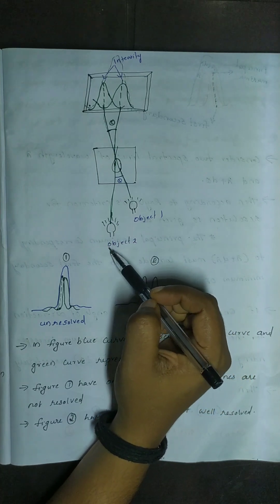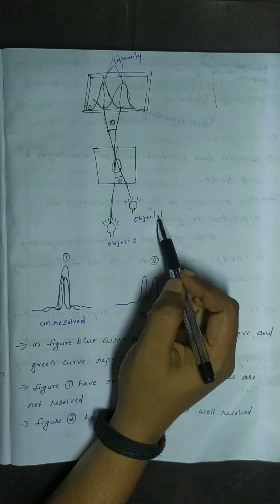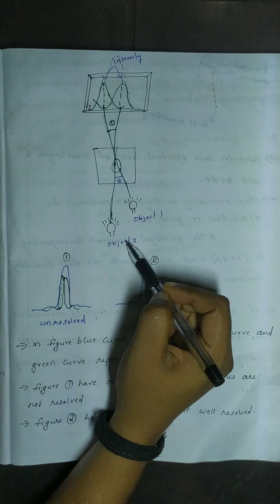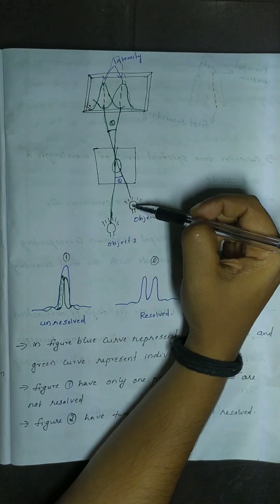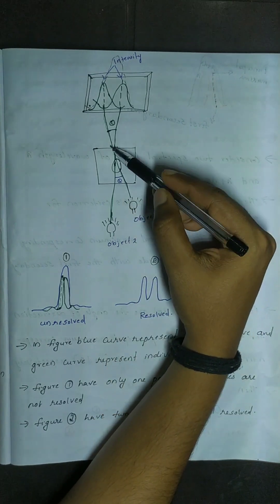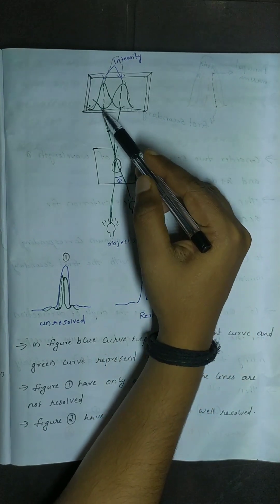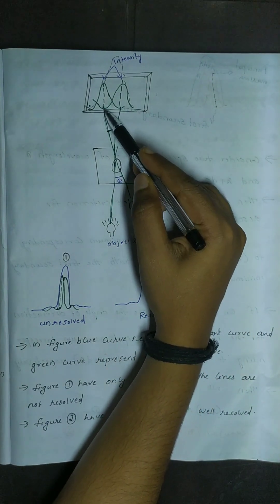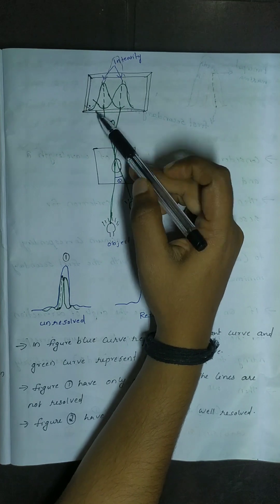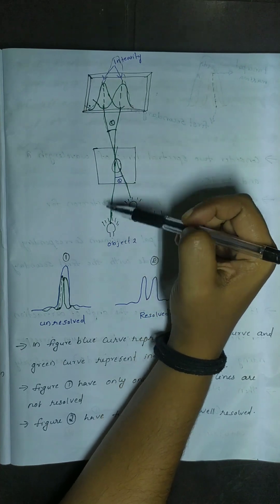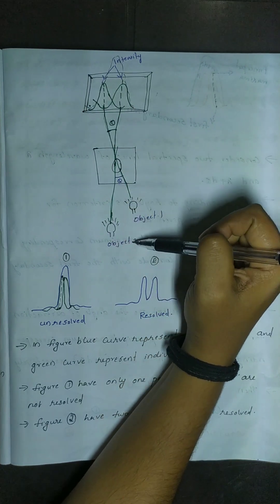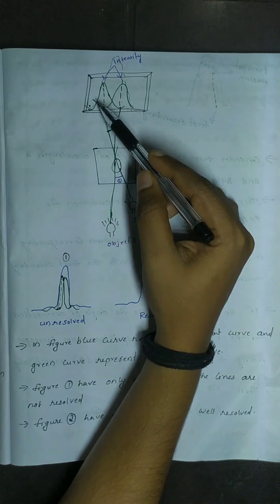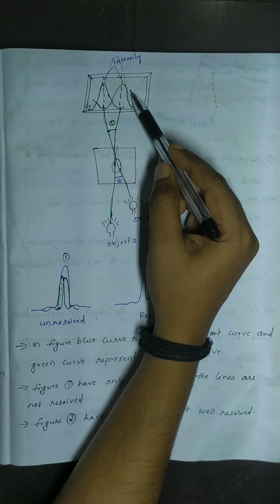Now, this is object 1 and this is object 2. Object 1 is diffracted by a theta angle on the screen. Object 2 is focused at a theta angle on the second wavelength.